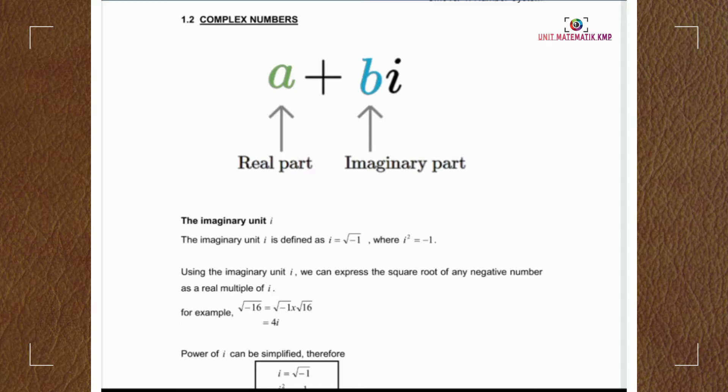The standard form of a complex number is a plus bi, where a and b are real numbers.